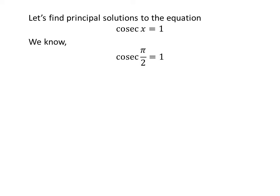We know the value of cosecant of π/2 is 1. There is only one principal solution to the equation cosecant of x equals 1, which is π/2.